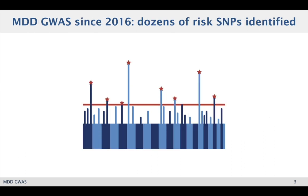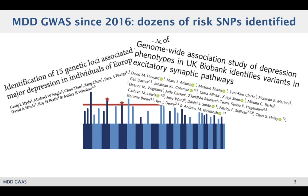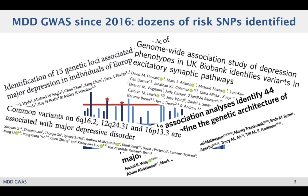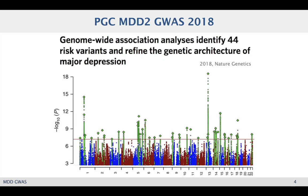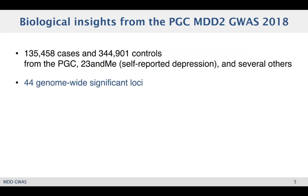This changed from 2016 onward when sample sizes increased and more genome-wide significant loci were identified. These increased sample sizes were mainly made possible by the efforts of the PGC, but also by 23andMe and UK Biobank, which also contributed large samples. I'm going to introduce you to the biology of MDD as discovered by genome-wide association studies using the 2018 PGC study. This study analysed about 135,000 MDD cases from PGC cohorts and several others, notably a large one from 23andMe, and identified genome-wide significant variants at 44 independent loci.